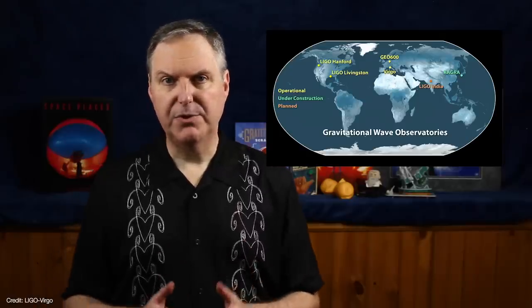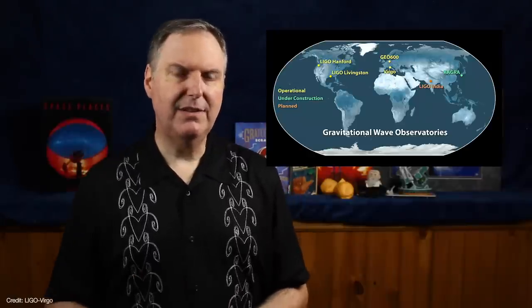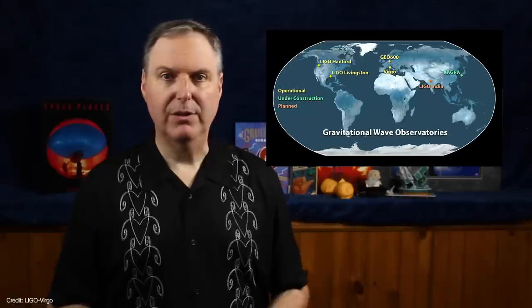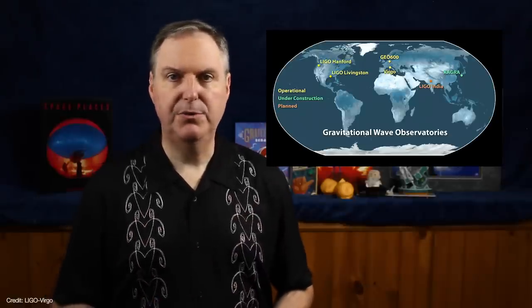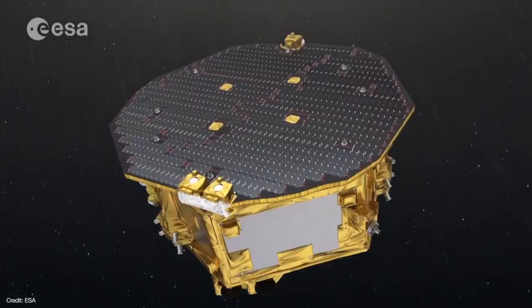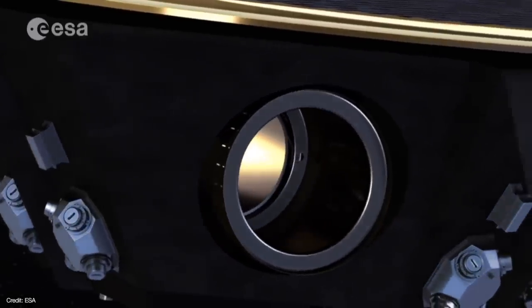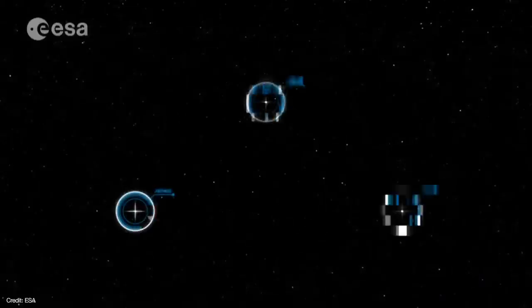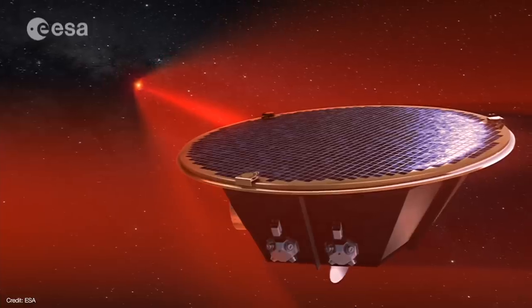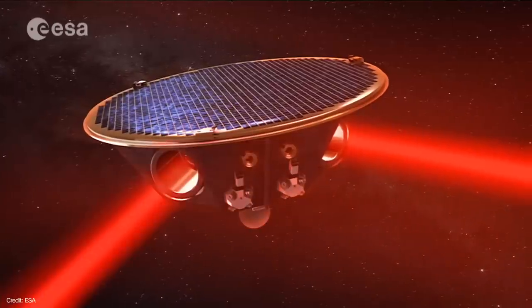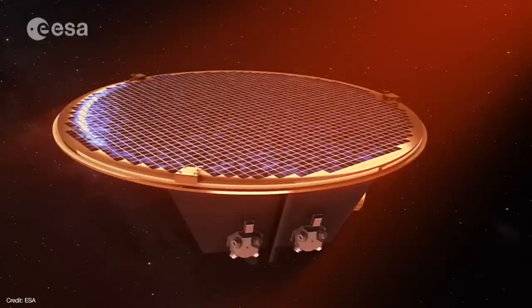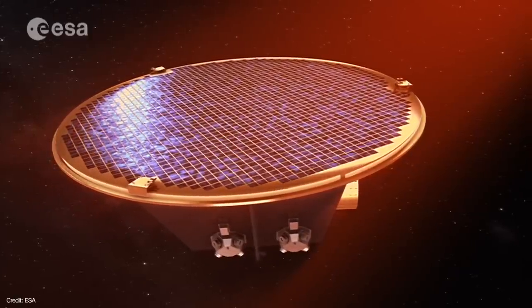KAGRA began its first observing run in 2020. The extra sensitivity of the LIGO-VIRGO-KAGRA collaboration will allow more of these intermediate mass black holes to be detected. In the 2030s, the Laser Interferometer Space Antenna, or LISA, will be the first space-based gravitational wave observatory. Three spacecraft will form a triangle 2.5 million kilometers on each side. They'll detect the formation of intermediate mass black holes that are hundreds, thousands, even hundreds of thousands of solar masses. In fact, it will be so sensitive it'll be possible to detect mergers weeks, months, perhaps even years in advance.